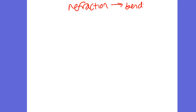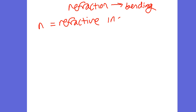Refraction is the bending of light. We're going to talk about the refractive index. N is the refractive index, and N is a measure of how much the light refracts. The higher the refractive index, the more refraction, and therefore the more the light bends.